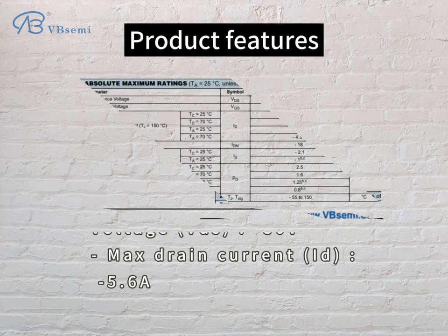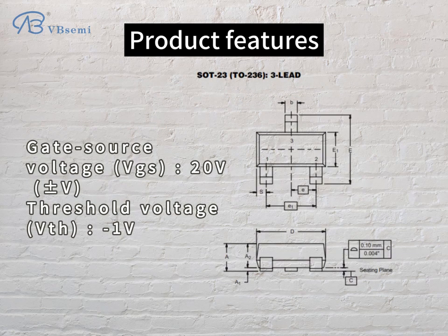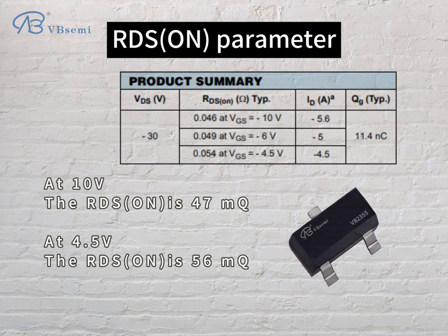Product features: Maximum drain-source voltage VDS -30V, max drain current 4.5A to 5.6A, gate-source voltage VGS ±20V, threshold voltage VTH -1V. RDS(on) parameters: at 10V, RDS(on) is 47mΩ; at 4.5V, RDS(on) is 56mΩ.